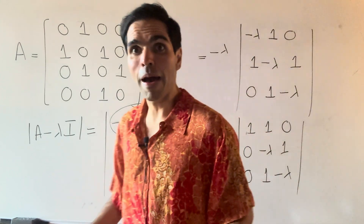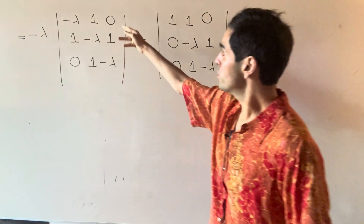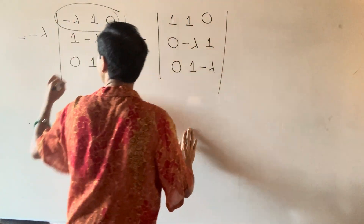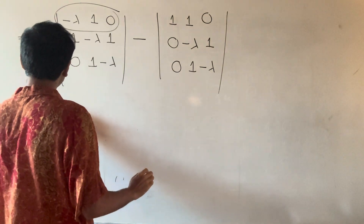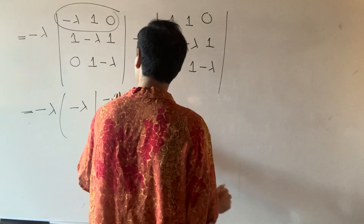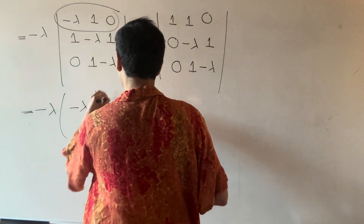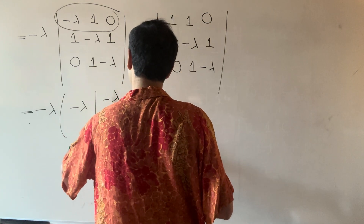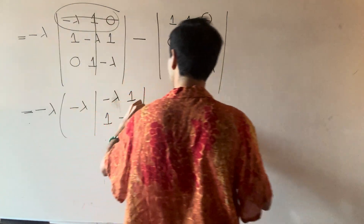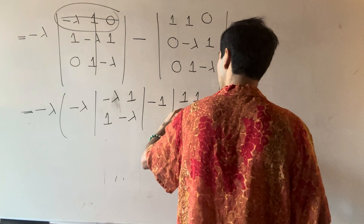And then we can continue expanding out those determinants. So now let's expand along the first row. What we have is minus lambda times minus lambda times the determinant of minus lambda, one; one, minus lambda — and then minus one times the rest, so determinant of one, one; zero, minus lambda.